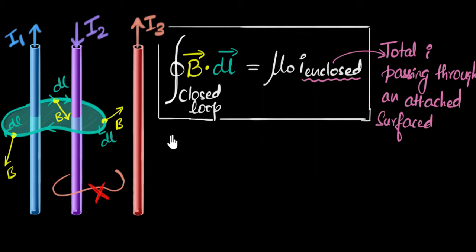So in our example, what would be the value of B dot DL according to Ampere's law? Well, that's going to be μ₀ times, what is I enclosed?